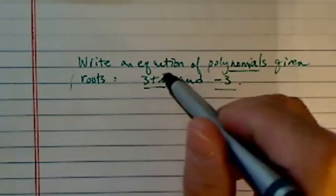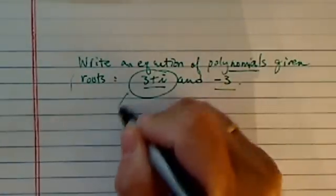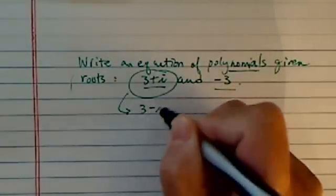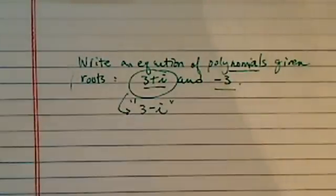Actually, there's a trick in here. When they give you a complex root, it's assumed that you know or it's implied 3 minus i is also a root.